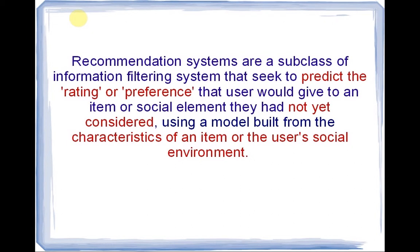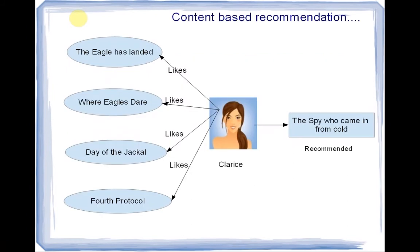In the present digital world, recommendation systems are everywhere — right from online retail stores to online dating sites. They are present everywhere, helping us make the right choices. There are two main classes of recommendation systems: content-based recommendation systems and collaborative filtering systems.